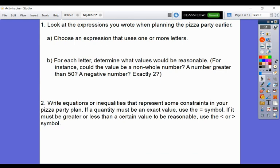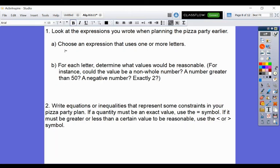Look at the expressions you wrote when planning the pizza party earlier. Choose an expression that uses one or more of your letters or variables. So I'm going to do 4C plus 4P, where C equals money per cheese pizza, and P equals money per pepperoni pizza.